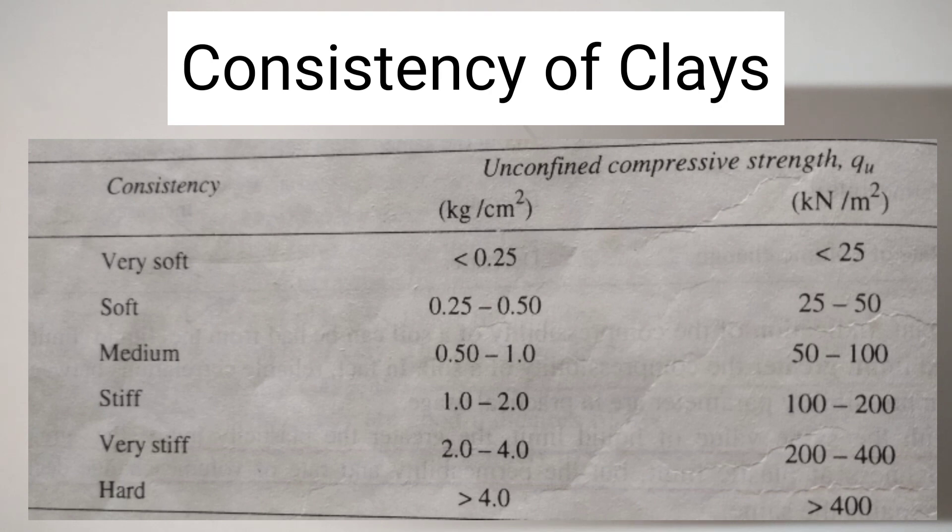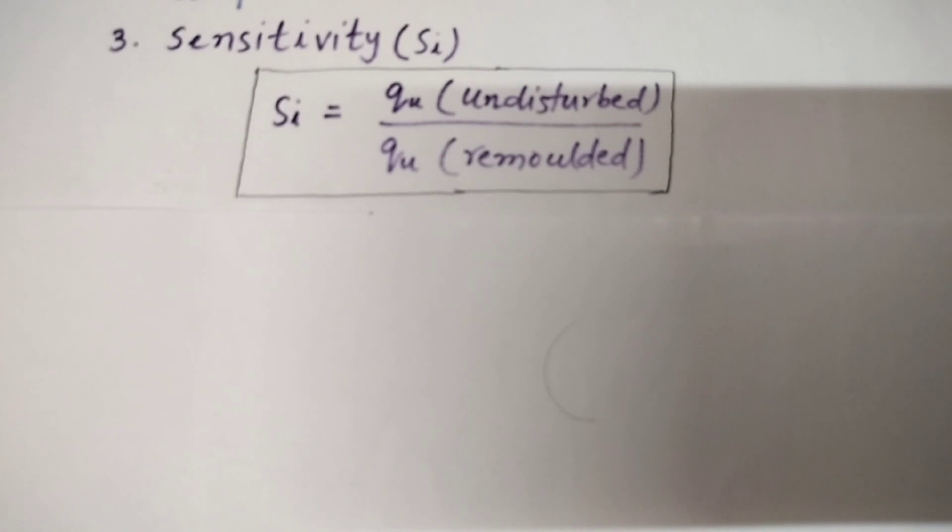If the consistency is very soft, we can see the unconfined compressive strength is in kilogram per centimeter square less than 0.25. Similarly, for soft, medium, stiff, very stiff and hard clays, the unconfined compressive strength is given here in the table in terms of kilogram per centimeter square and kilo Newton per meter square.